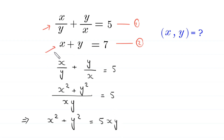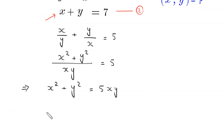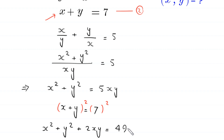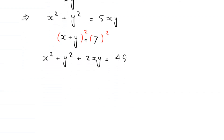Now we take Equation 2: x plus y equals 7, and square both sides. This gives x squared plus y squared plus 2xy equals 49. We move 2xy to the right-hand side.